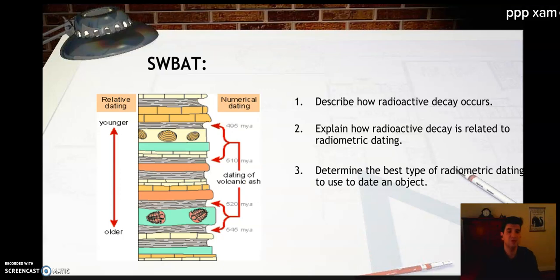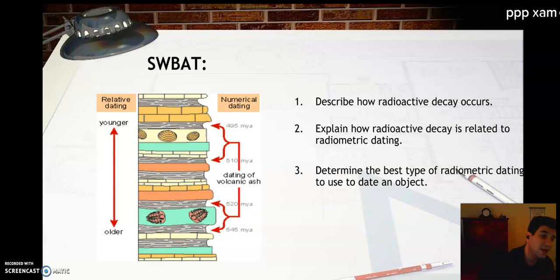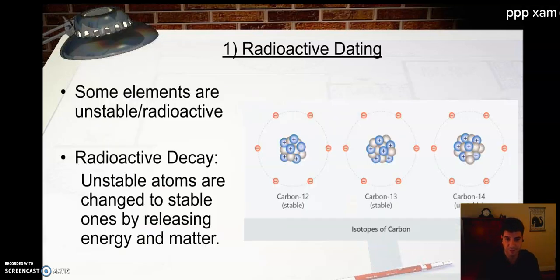So today students will be able to describe how radioactive decay works, explain how radioactive decay is related to radiometric dating, and determine the best type of radiometric dating to use for an object. So on the left here you can see we have some relative dating. We can see the olders on the bottom and the youngers on the top, but that is not always the best way to do things because we know layers can sometimes be overturned.